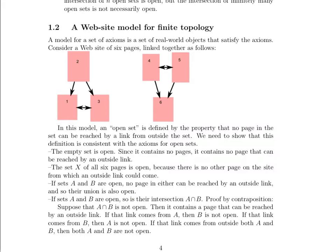But remember that the next rule is that the set X itself, the set of all the elements, must also be open. So our set X is all six of these pages. And according to our definition of open, it is open because there's no other page. There's no page seven. There's no page eight. There's no other page on the site from which an outside link could come. Now let's take a look here.